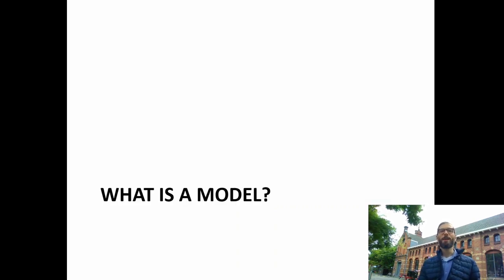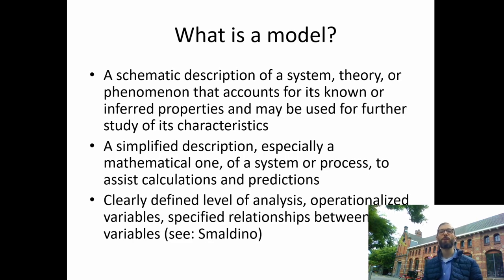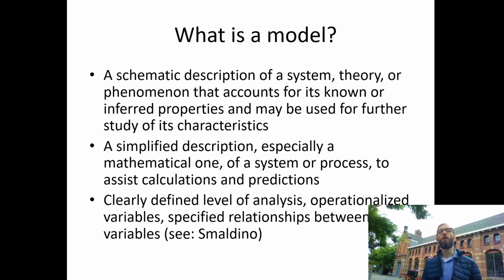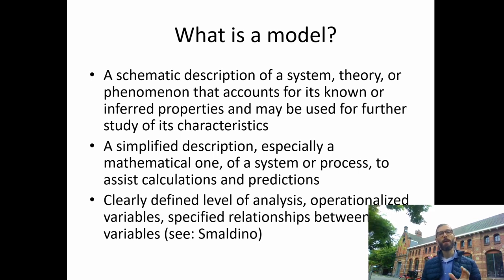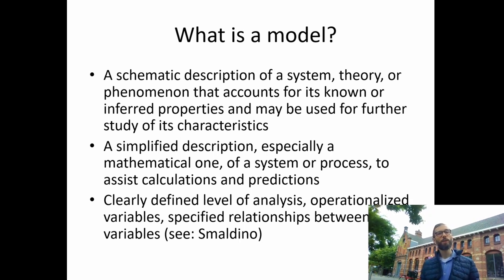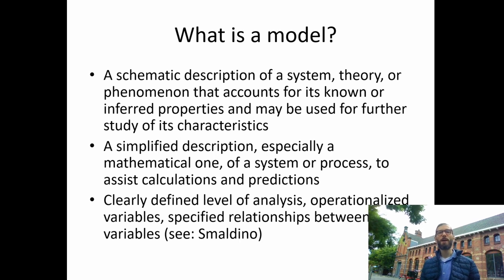With all of that out of the way, let's talk about the first content topic: what is a model? A model is a simplified description of observations — typically a mathematical description — and it assists calculation and prediction. When modeling, it is important that your level of analysis is clearly defined, every variable in your model should be clearly operationalized, and all relationships between the variables should be defined. The paper by Smaldino explains this kind of explicit modeling in great detail.